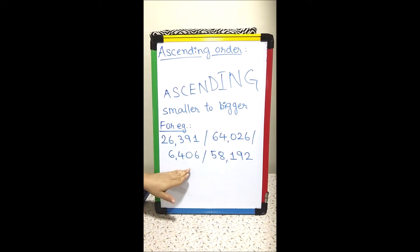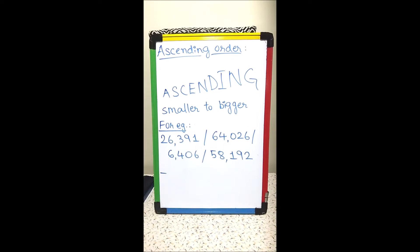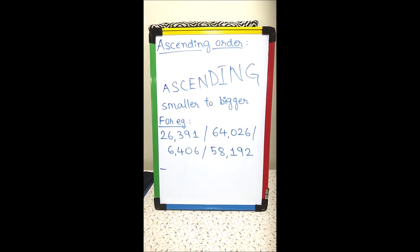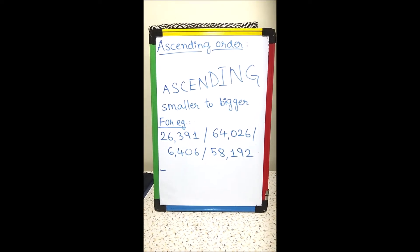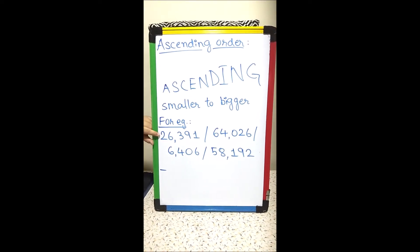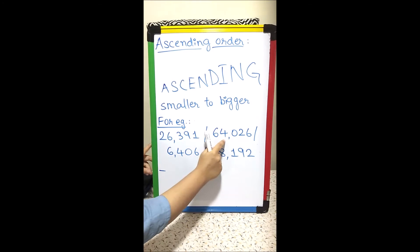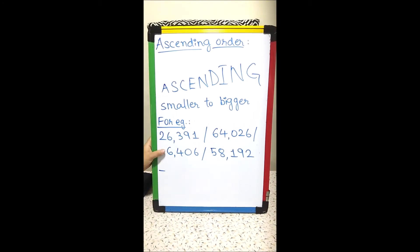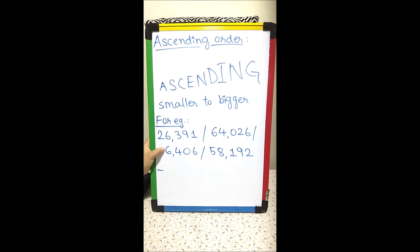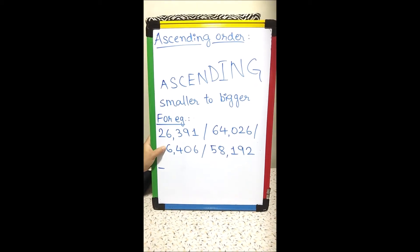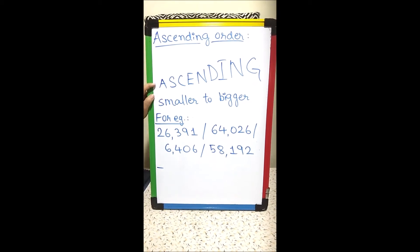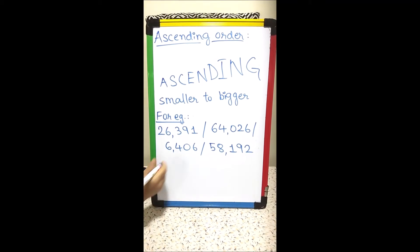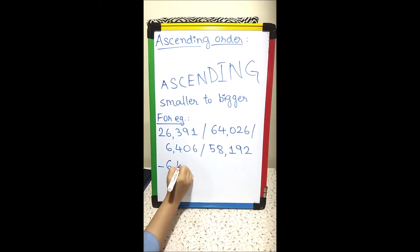Here also it is a type of comparison. Let us see the number of digits in each number. This is a five digit number, this is a five digit number, this is a four digit number, and this is a five digit number. So obviously the four digit number will be the smallest, and will come first because we are arranging in ascending order.